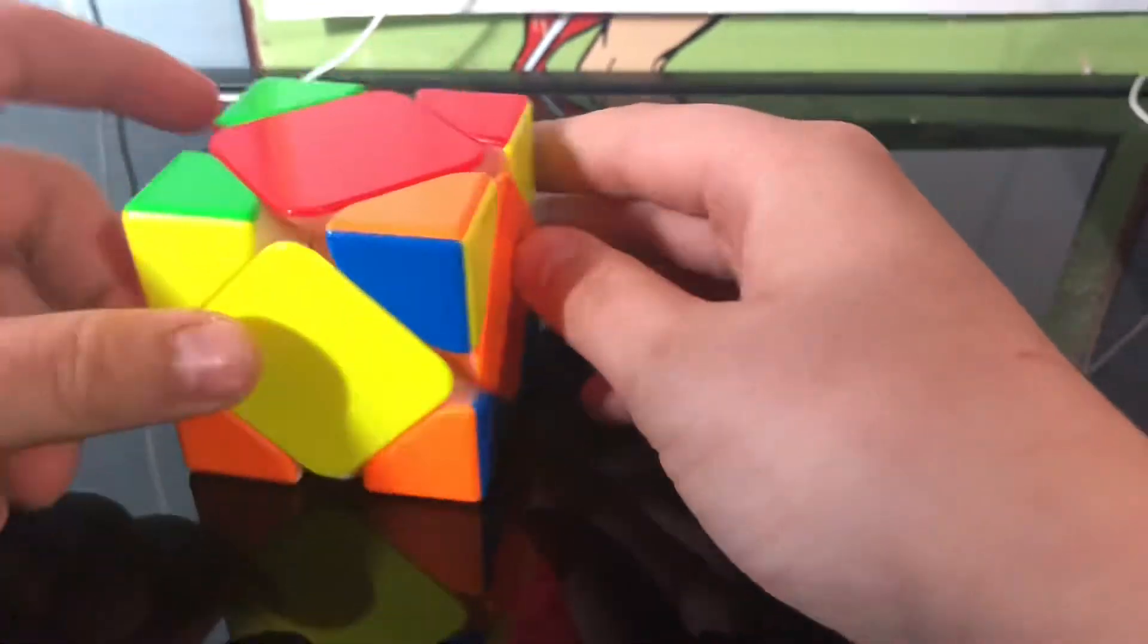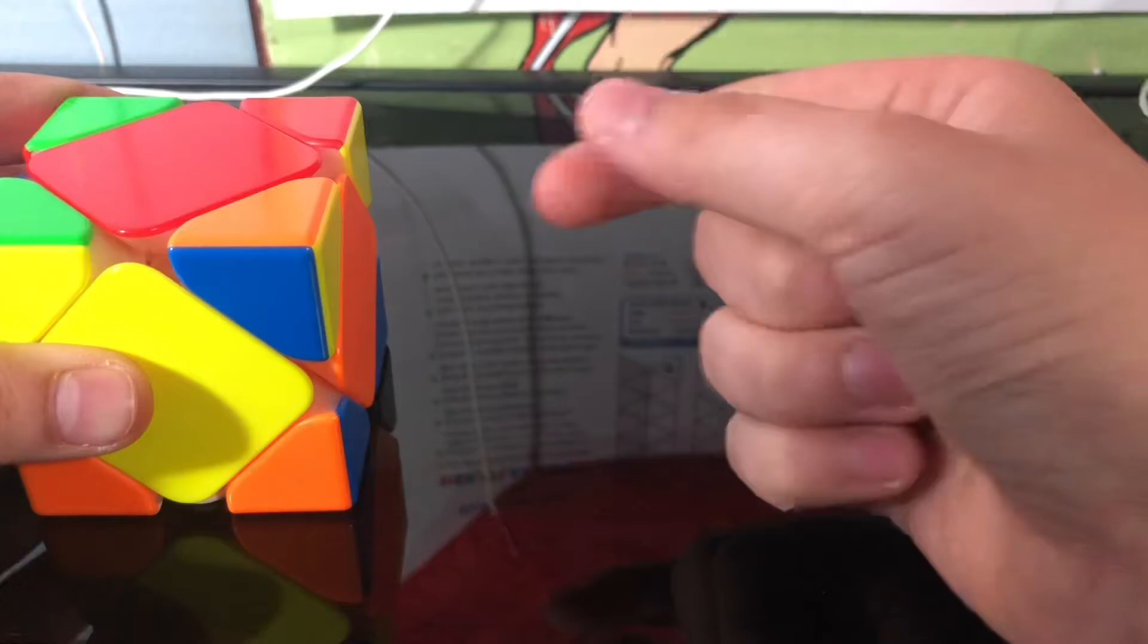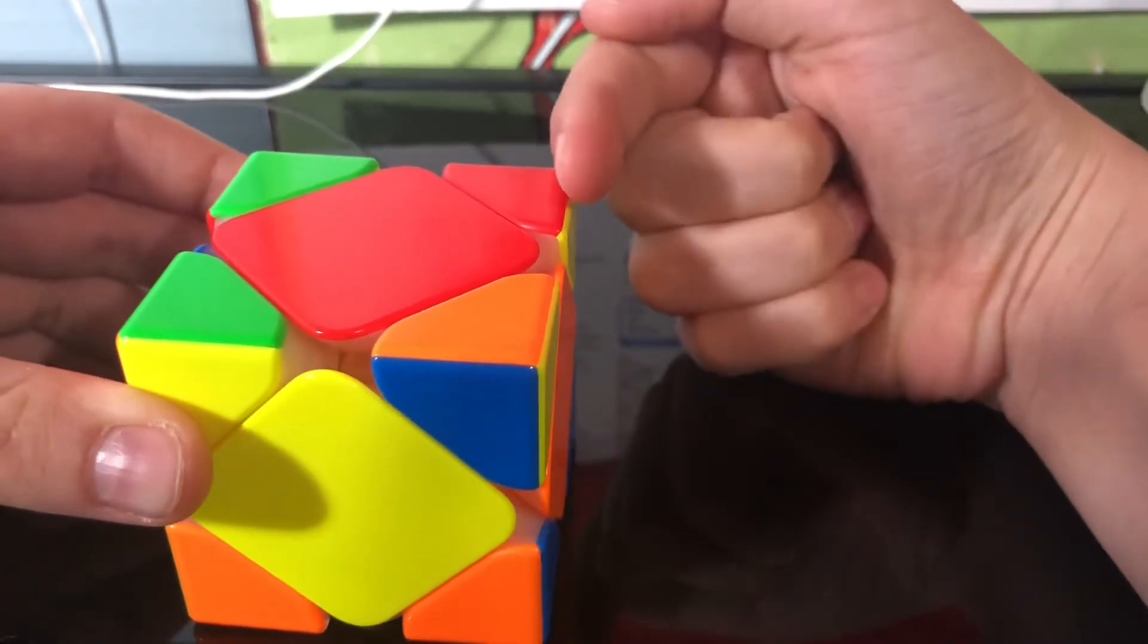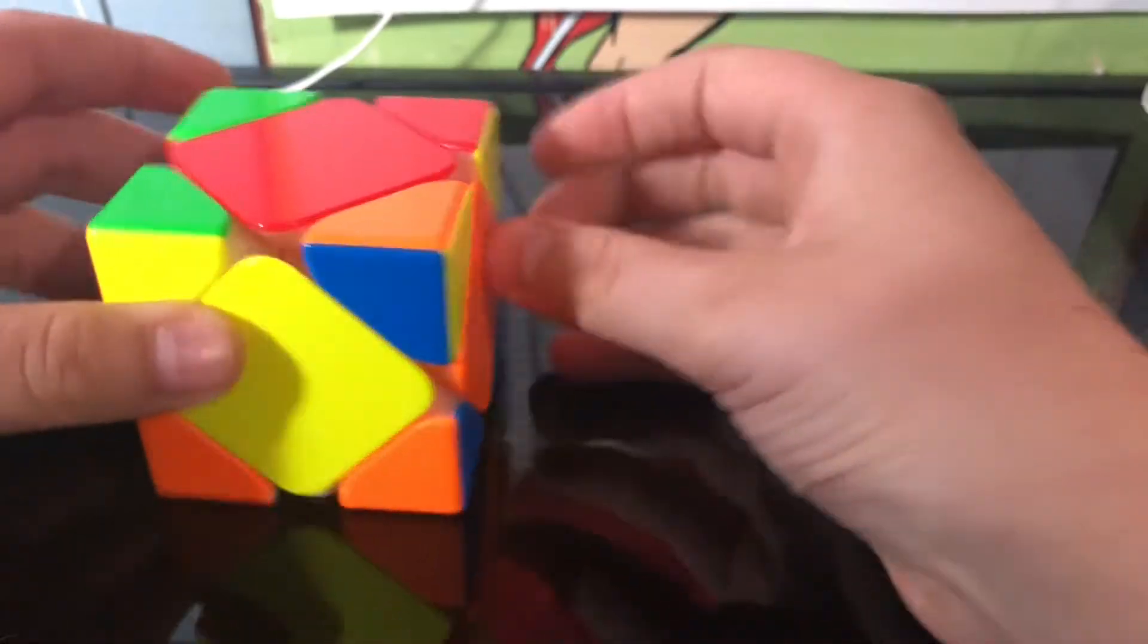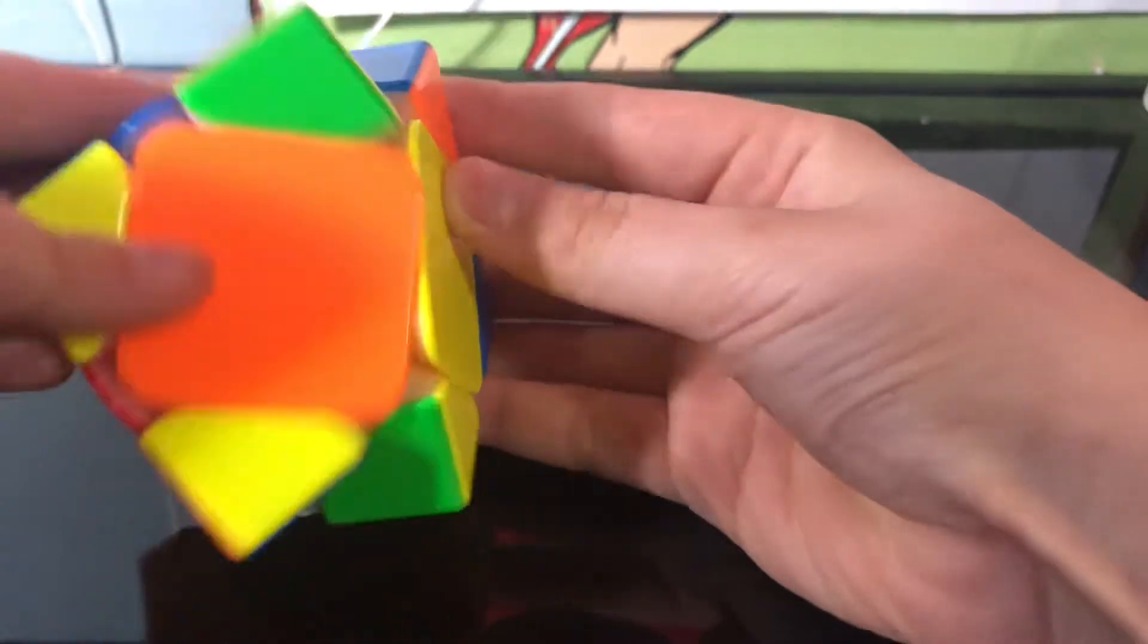Now you'll get to this place where two are facing that way and one's facing that way and another facing this way. So now if you're like this, you're going to do the same algorithm: right down, left down, right up, left up.